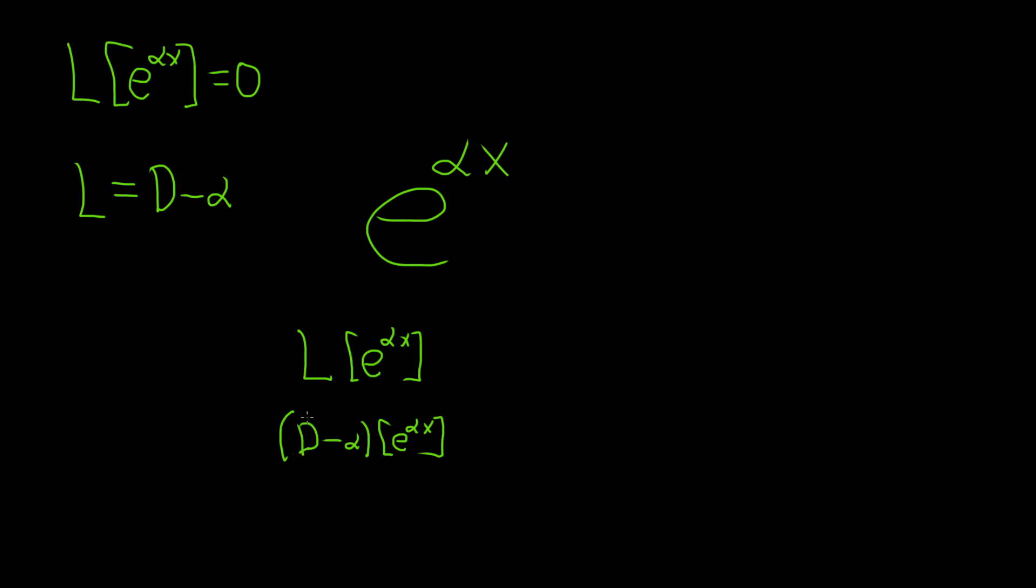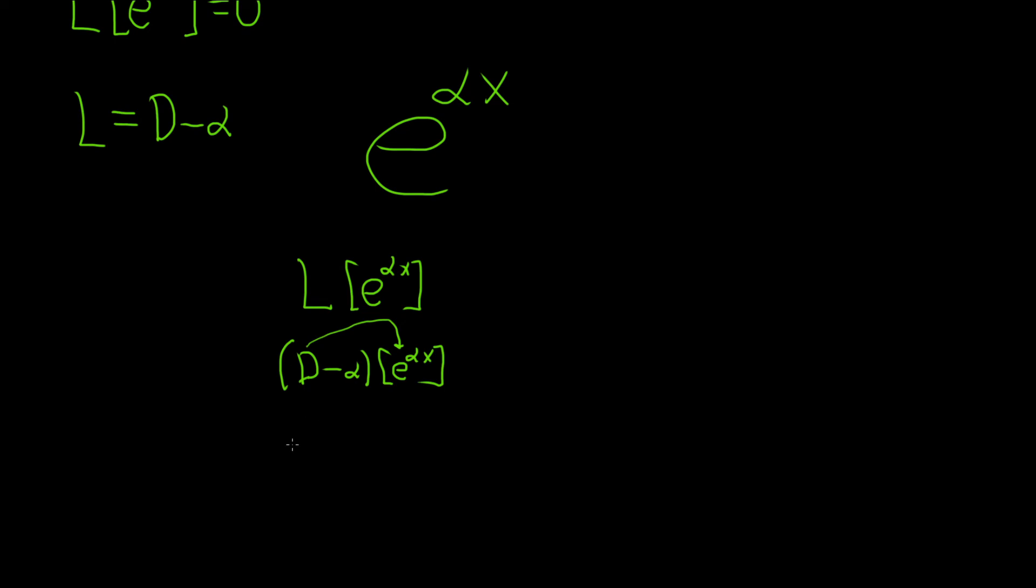So how does that work? Well, basically, you take the D and you apply it to this. That means take the derivative. The derivative of e to the x is e to the x, but here it's alpha x. So we have to use the chain rule. So it'll be e to the alpha x times the derivative of the inside. So alpha is a constant. So the derivative of alpha x is just alpha because the derivative of x is 1.